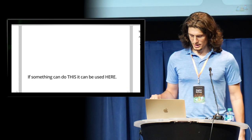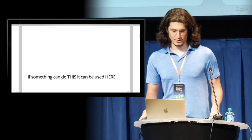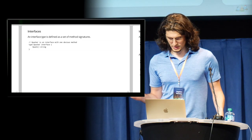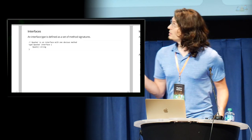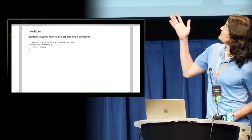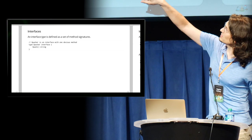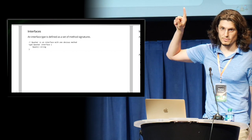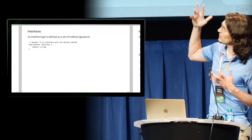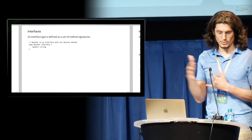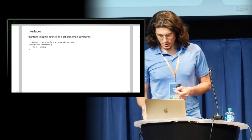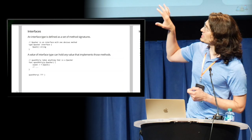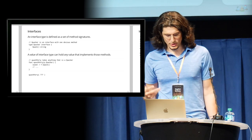The interface that controls who can get into the quack party looks like this. An interface type is defined as a set of method signatures. We make an interface — its name is Quacker — and it has one method in its set of methods, which is quack. It's a function called quack that returns a string. That's how you define it. The actual creation of the interface type was the part that made sense to me pretty early on — it was pretty intuitive.